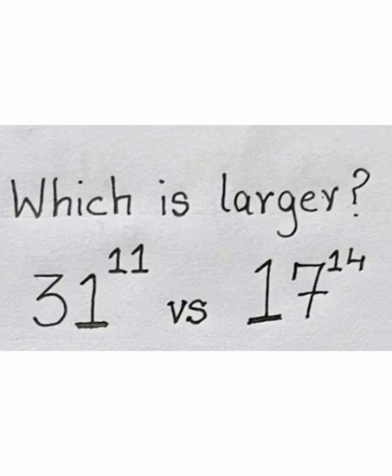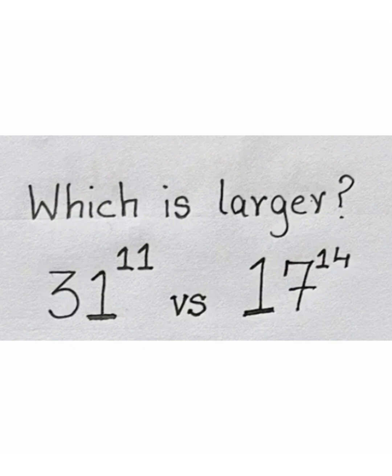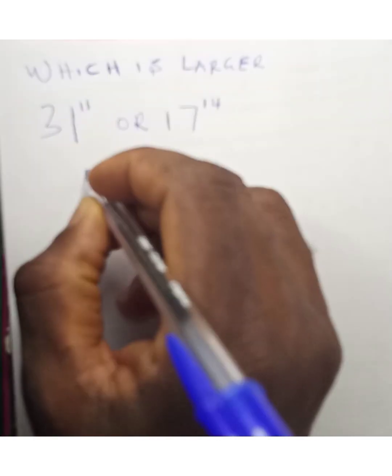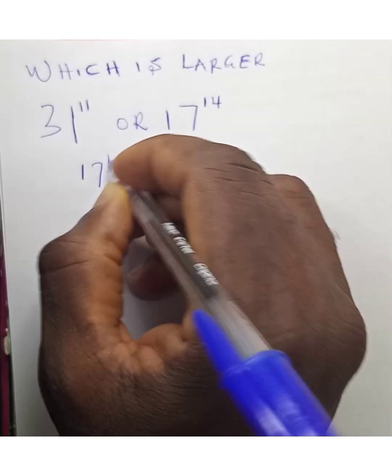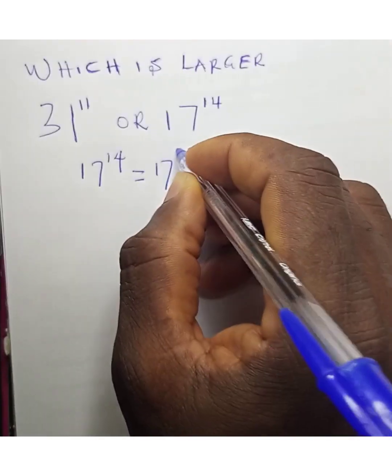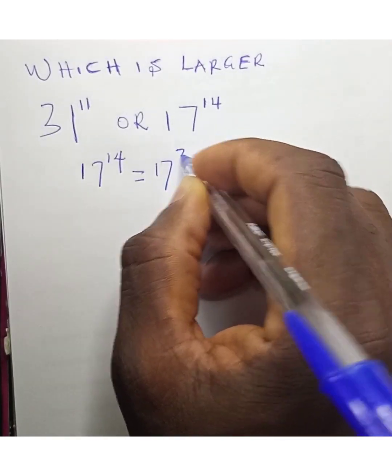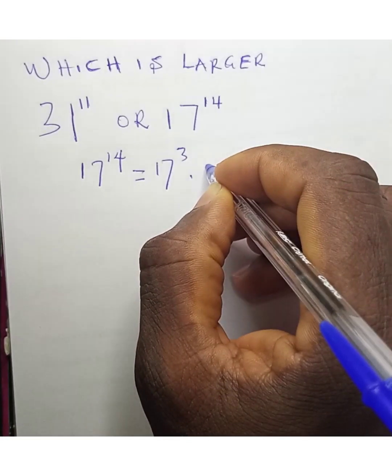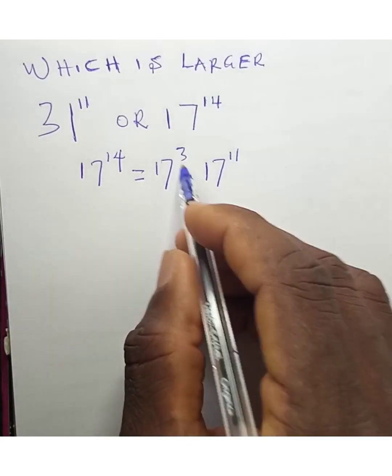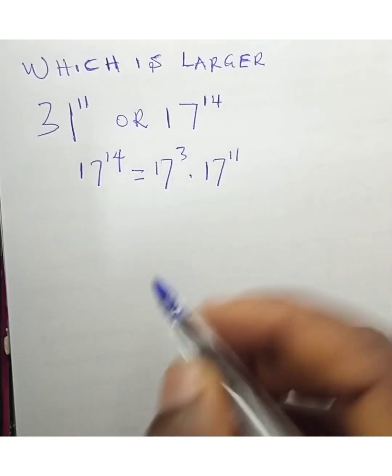We are asked which is larger: 31 to the power of 11, or 17 to the power of 14? To do this, we can rewrite 17 to the power of 14 as 17 to the power of 3 times 17 to the power of 11, because adding the exponents gives us 17 to the power of 14.